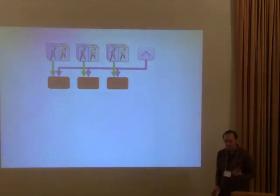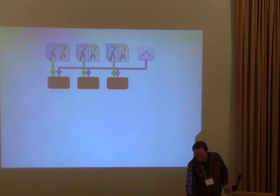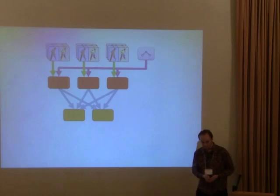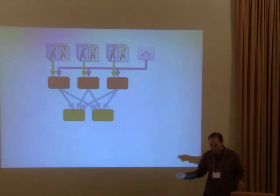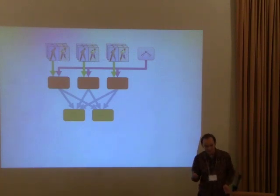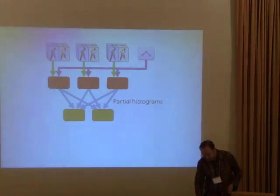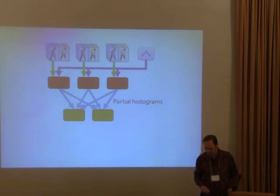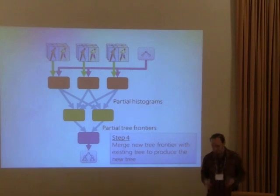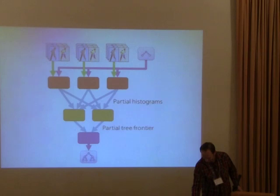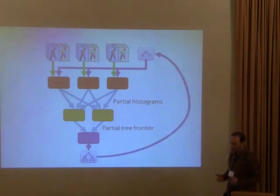Next, we compute the complete histogram for each tree node. The partial histograms are repartitioned by node ID and the counts for each key are summed together. This moves from parallelizing on training images to parallelizing on decision tree nodes. The aggregated data allows each node to compute the best feature — the one with the highest normalized information gain — yielding a new tree node split on that feature. The last step merges the new partial tree frontiers with the existing tree to produce the updated tree for the next round.